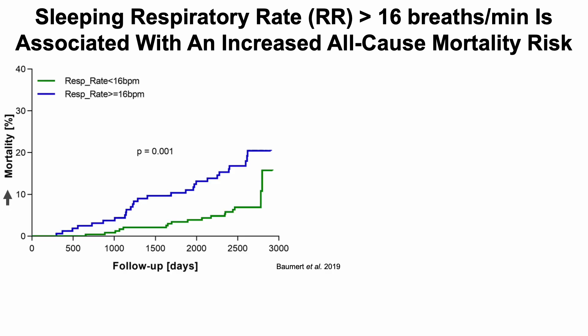On the y-axis we've got percent mortality — the percentage of people who died — up to 3,000 days after the initial assessment of the nighttime sleeping respiratory rate. This is a relatively small study of 406 older adults with an average age of 83.1 years. We can see the lowest all-cause mortality risk for the group that had a respiratory rate less than 16 breaths per minute, shown in green.